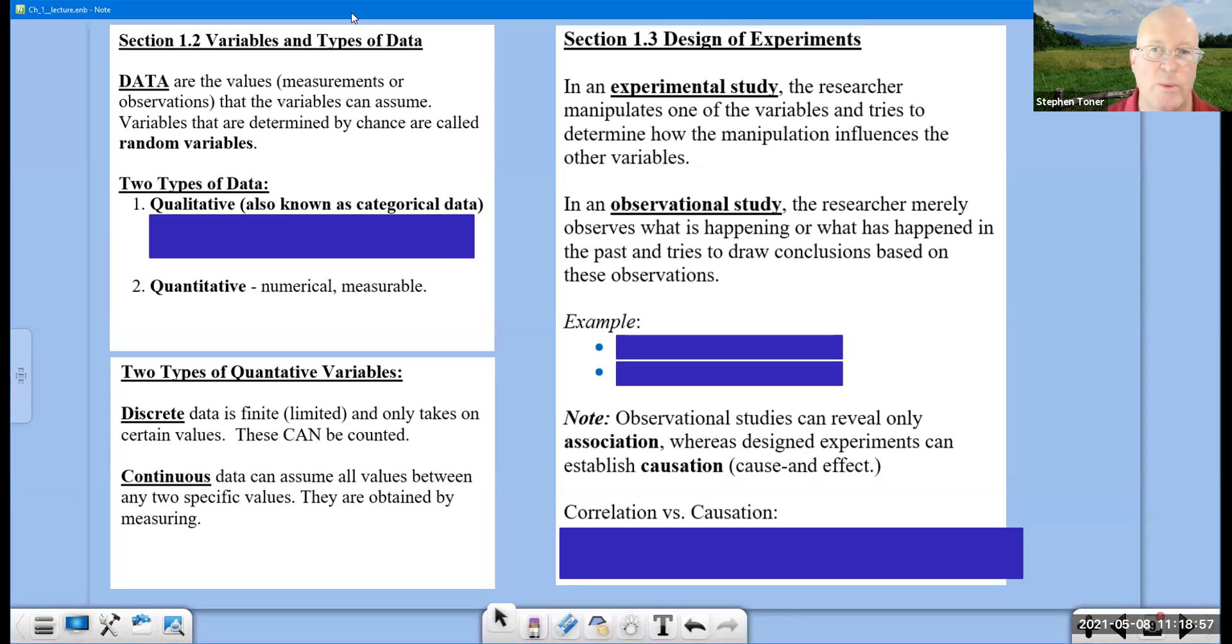In this second video, we talk a lot about the design of experiments, but we begin by talking about data. Data are the values, measurements, or observations that variables can assume, and variables that are determined by chance are called random variables.